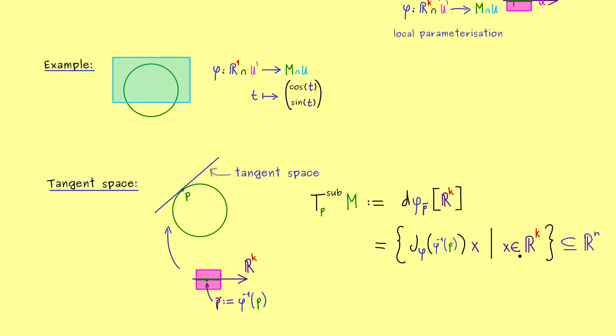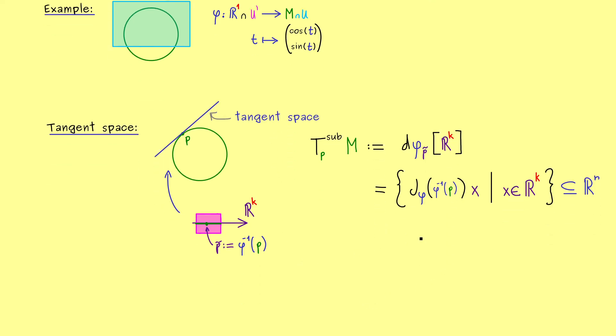However, the input was given by the dimension of the manifold, so by R^k. So you can remember, in general this Jacobian matrix will not be a square matrix. There we have it - this is the tangent space for submanifolds in R^n.